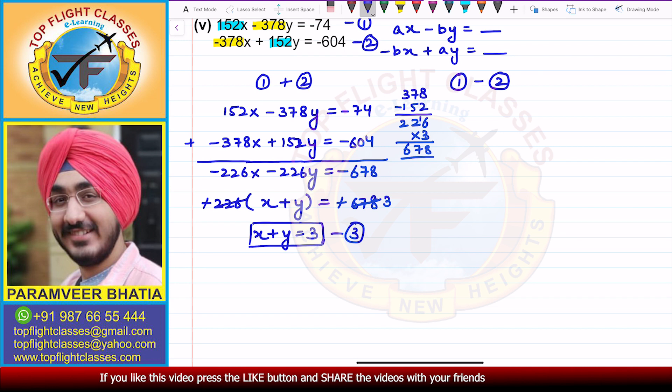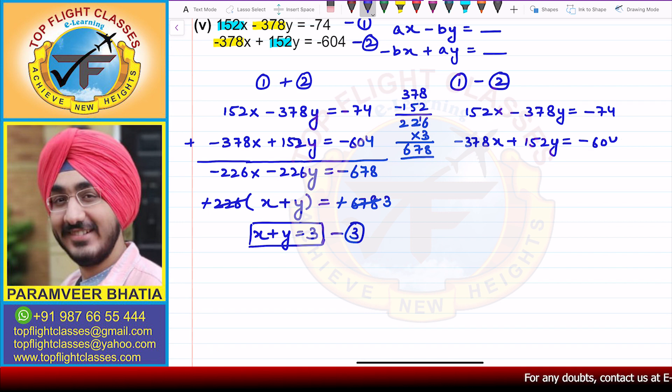Now I will subtract the two equations. So that is 152x - 378y = -74. And I have -378x + 152y = -604. Now on subtraction, the signs change. I will get over here, I have to add them.